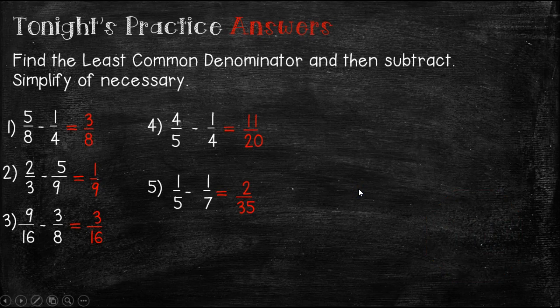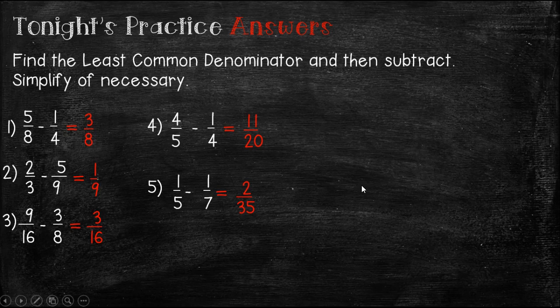All right, here are your answers for tonight's problems. The answer to number 1 is 3 eighths. The answer to number 2 is 1 ninth. The answer to number 3 is 3 sixteenths. The answer to number 4 is 11 twentieths. And the answer to number 5 is 2 thirty-fifths.